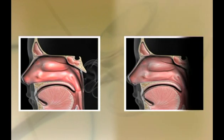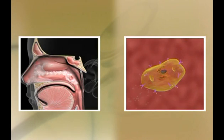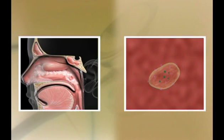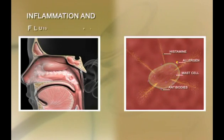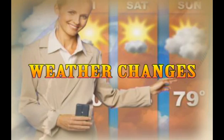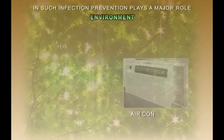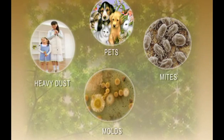One of the acute respiratory diseases is allergic rhinitis. This illness is brought on by airborne irritants or allergens that trigger the release of histamine, causing inflammation and fluid production in the fragile linings of nasal passages, sinuses, and eyelids. This may be caused by weather changes or may last throughout the year. Prevention plays a major role; environmental controls such as air conditioning during pollen season is advisable. Avoiding areas where there is heavy dust, mites, molds, and avoiding pets help keep away these allergens.